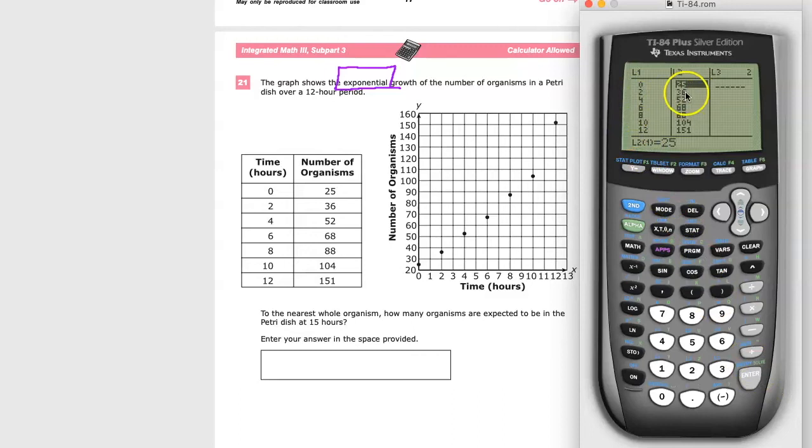Zero and 25, two and 36, four and 52, six and 68, eight and 88, 10 and 104, and 12 and 151. So anything in that general area is how you're going to do it. Just make sure they're not mixed up because then it'll give you a weird answer.